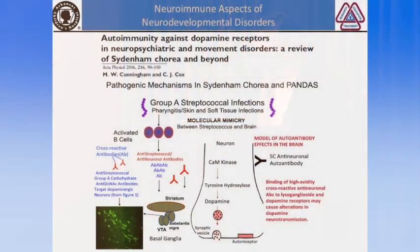Dr. Cunningham's figure summarizes these processes: antibodies that cross-react with infectious agents target the basal ganglia, where in the neuron they activate CAM kinase 2, which activates tyrosine hydroxylase, producing and increasing dopamine within the brain, causing OCD behaviors and tics.